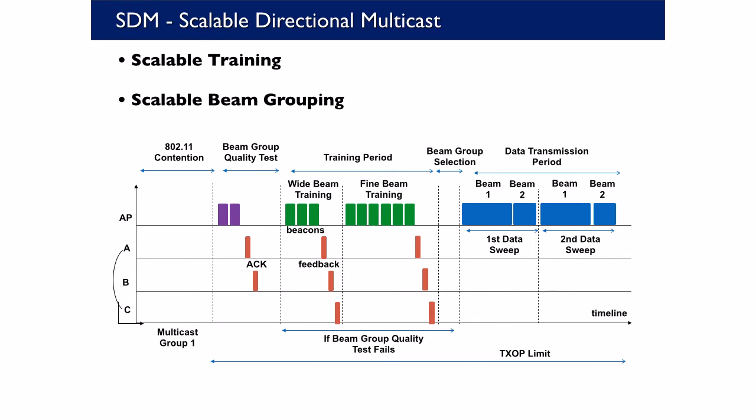We present Scalable Directional Multicast or SDM for short, the first 60 GHz multicast protocol to incorporate the training and beam grouping overhead.